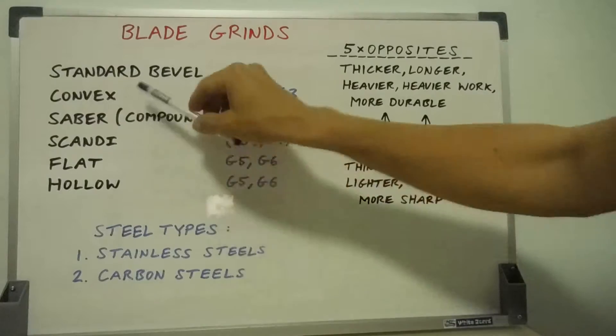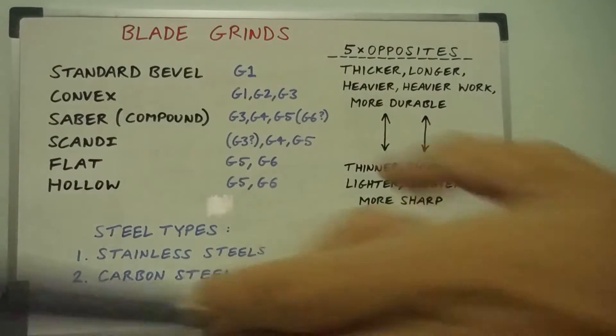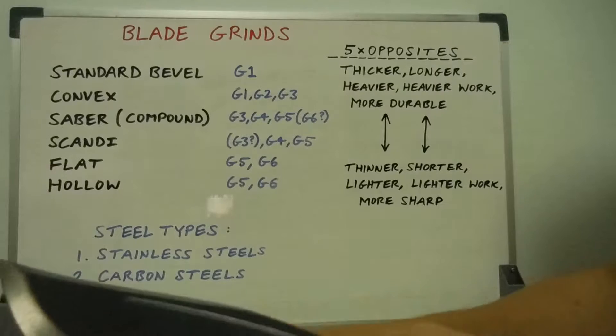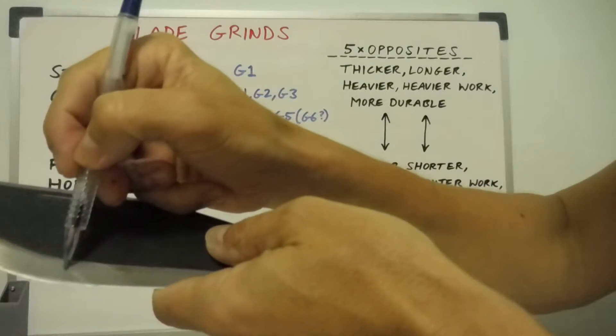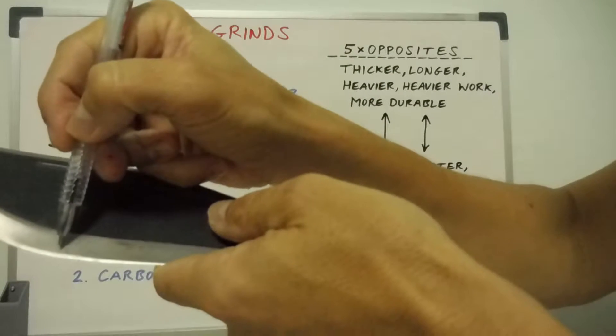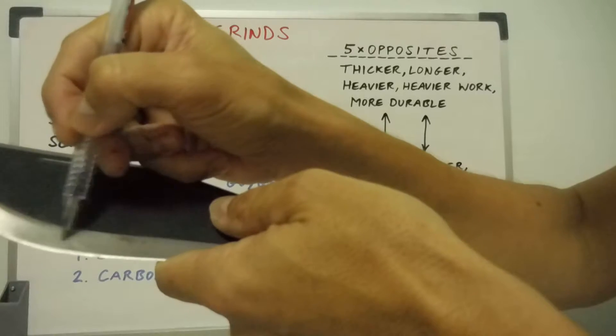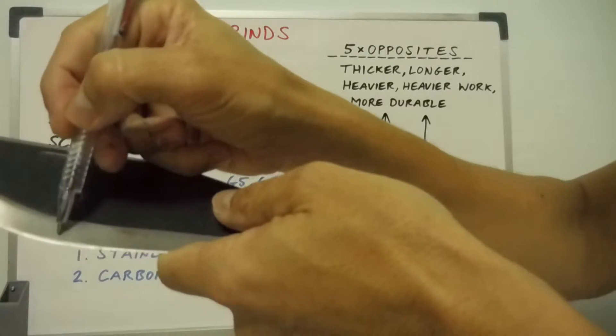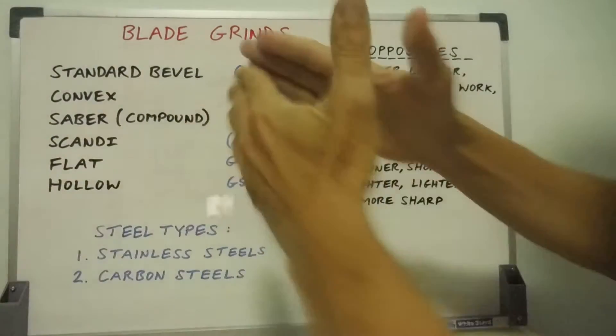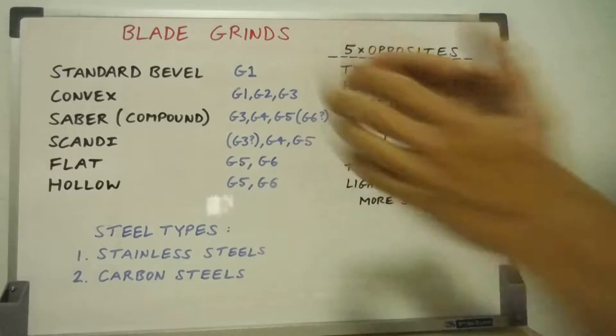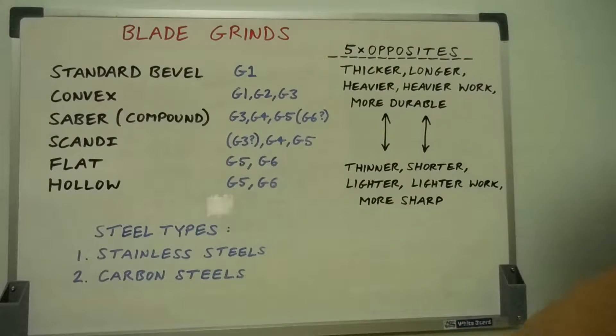And just in case you're wondering, a standard bevel is just a bevel on a thick blade. If you imagine a scandi grind starts closer, much closer, even more than halfway towards the cutting edge and just goes down to a very obtuse angle, shallow pyramid, then that is a very durable standard bevel and that could be a compound bevel.